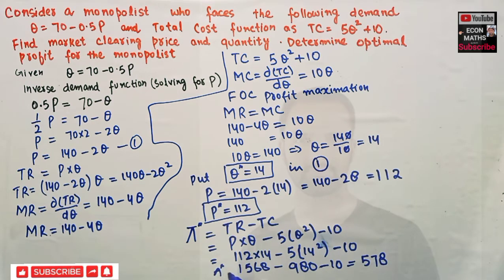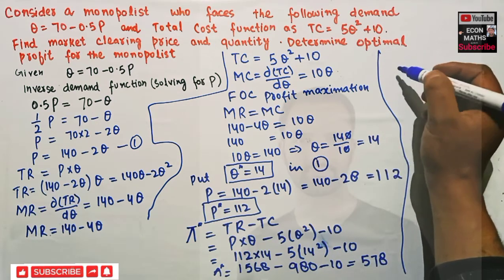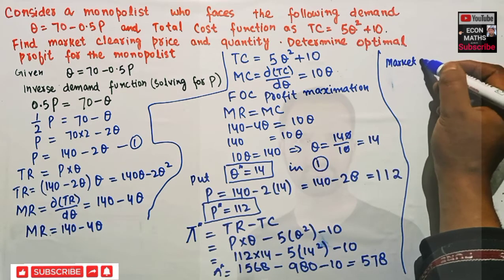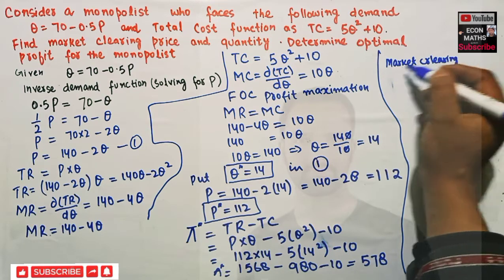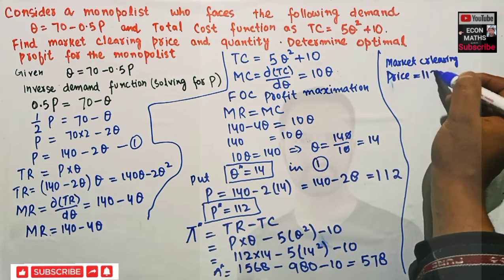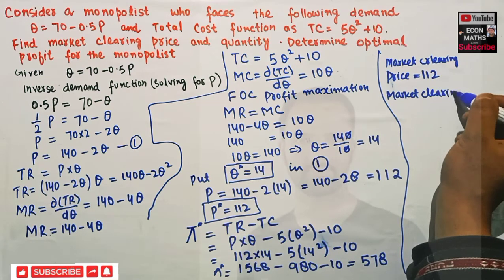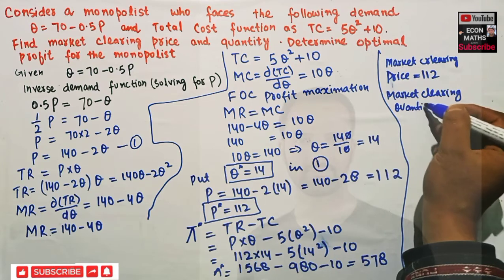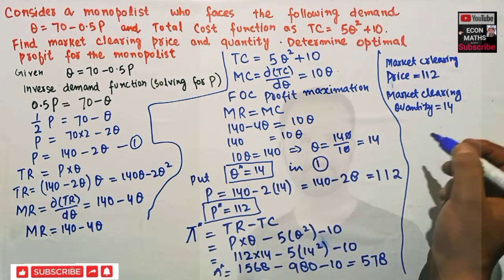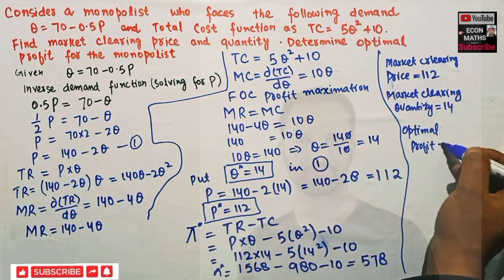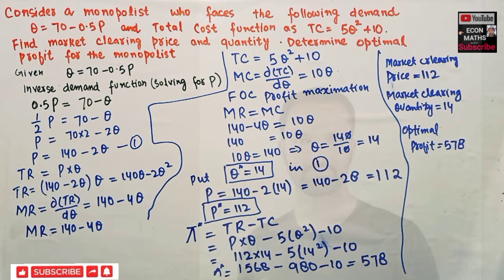So to summarize: the market clearing price is 112, the market clearing quantity is 14, and the optimal profit is 578. I hope I made myself clear in this video. If you like these videos, please share and subscribe to this channel with your economics friends — that is the only motivation for me to keep going. Thank you.